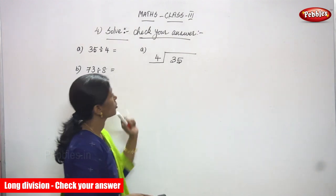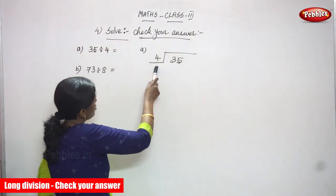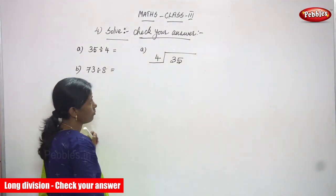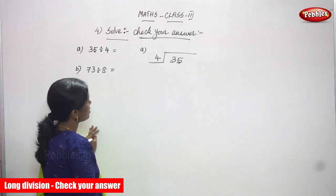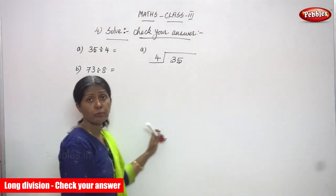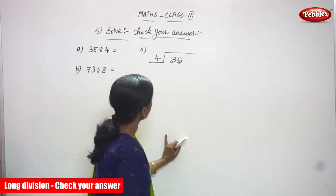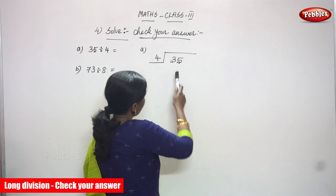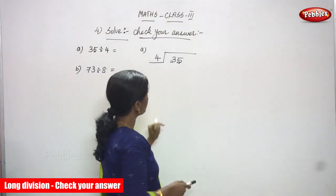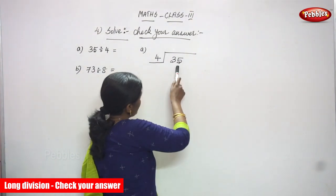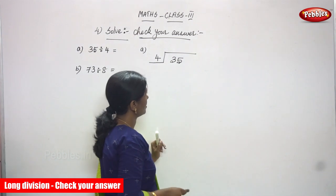Now we are going to divide. 35 is going to be divided by 4. It's a long division method, but you have to check your answer. So 35 is the dividend and 4 is the divisor.